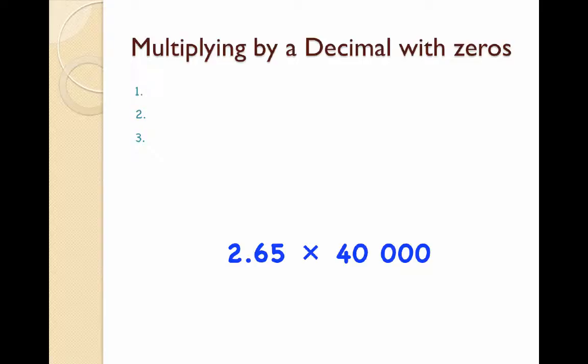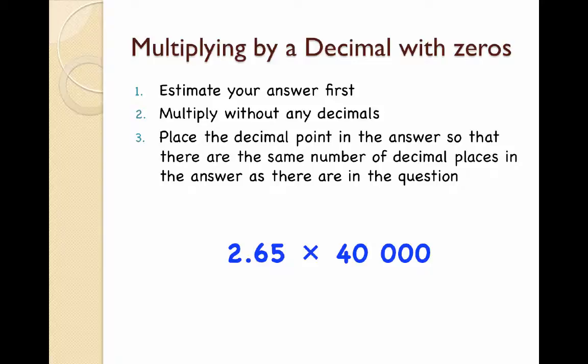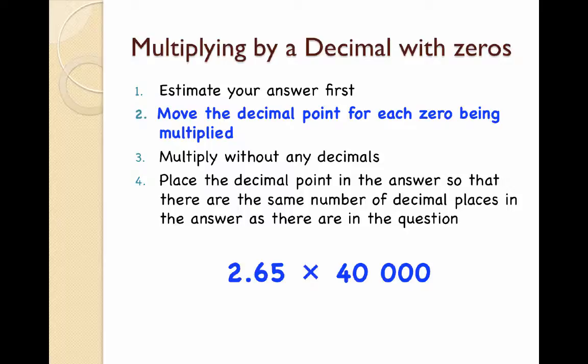Now, in our last video, we looked at three steps to go through. We had to estimate our answer first, multiply without any decimals, and then place a decimal point in the answer so that there were the same number of decimal places in the answer as there are in the question. Well, we're going to add one extra step to these rules, and here's what it is.